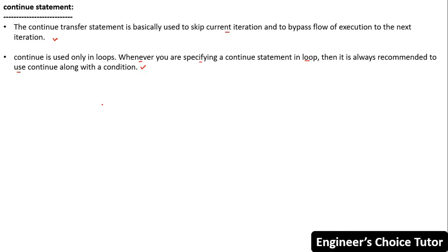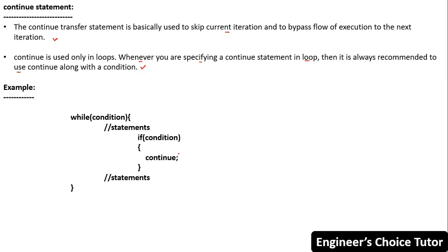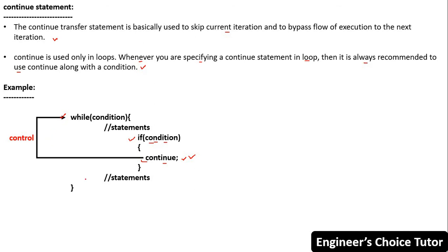Let's see an example. Here we are using the continue statement inside a while loop. This continue statement is used inside an if block, which means the execution of the continue statement depends upon the condition specified in the if block. Whenever you use a continue statement in a loop, it is always recommended to use it along with a condition. When JVM encounters this continue statement, the program control goes to the next iteration and the current iteration is skipped.